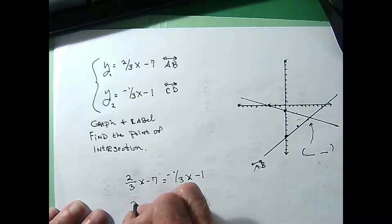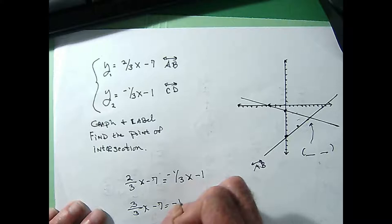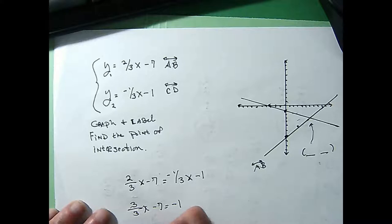Now, let's go ahead and collect like terms. I'm going to add 1/3x to both sides. It gives me 3/3x - 7 = -1. I'm going to bring that negative 7 to the other side. I've got 1x, 3/3x is really 1x, adding 7 to both sides, I've got 6 over here. So I'm thinking that x equals 6.